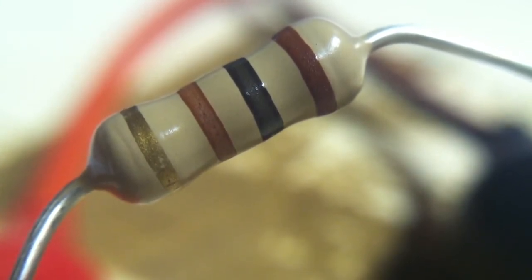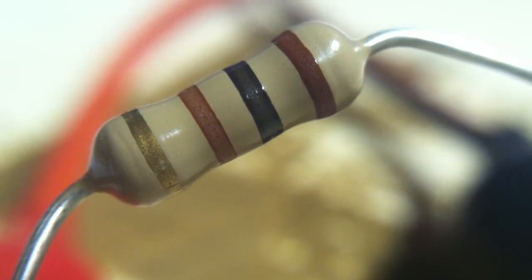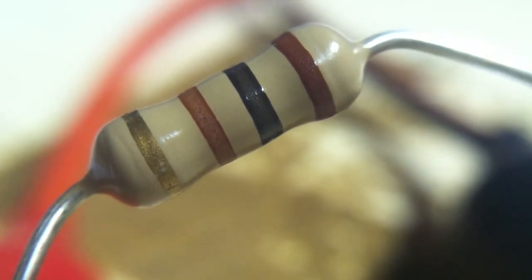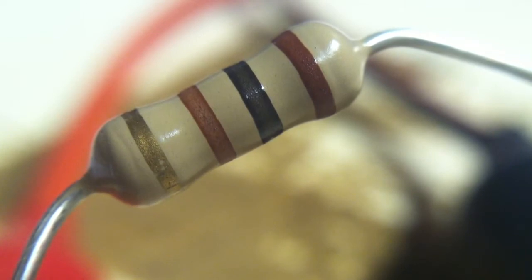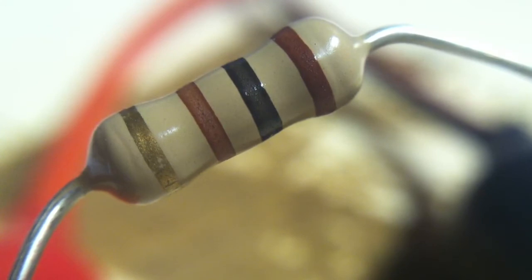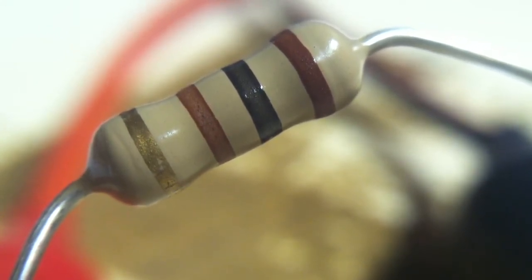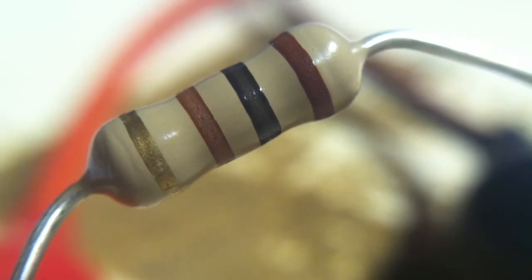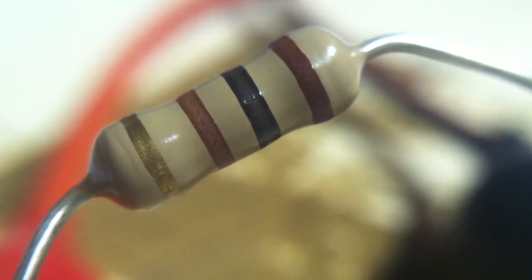We're at 5 volts now, and we're drawing 0.04 amps. We're at 10 volts now, and we're drawing 0.12 amps. Going up to 15, and we are drawing 0.2 amps. Going to 20 volts, and we're drawing 0.28 amps.